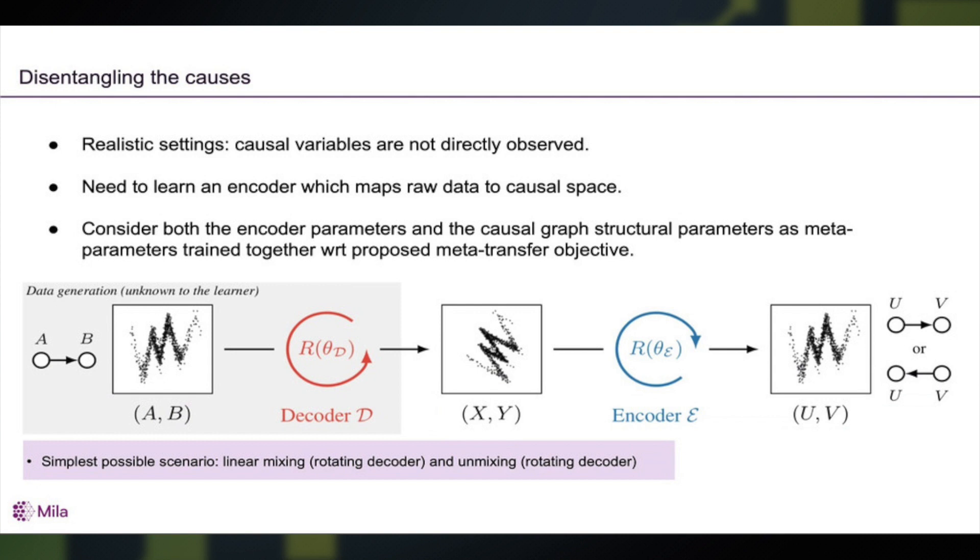So what we want is to learn at the same time a representation function, an encoder that maps the X, Y to some abstract space UV, as well as learn the dependency structure and the causal structure in the UV space.